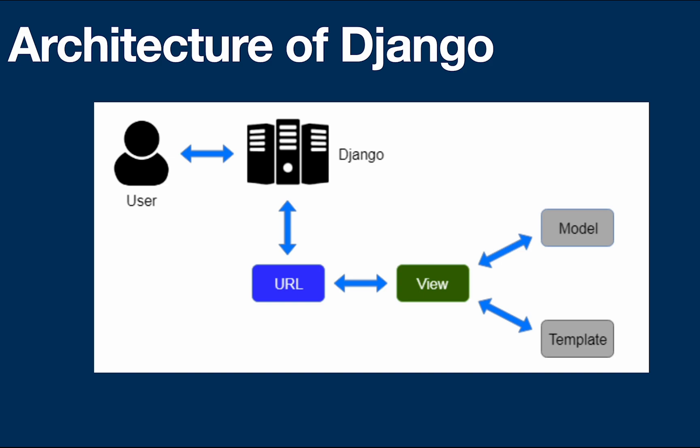By looking at the picture we can understand that a user requests a resource from Django. Django works as a controller and checks the available resource in the URLs. If the URL matches, a view is called that interacts with the model and template. The view is a business logic function which communicates with the database and processes the data. Then Django responds back to the user and sends a template, which is an HTML file, as a response.